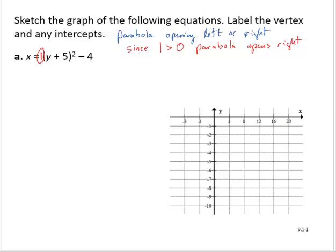Notice that this looks like a vertex form of the parabola that we learned about way back in chapter 4. But the x and the y are in different places. We can still find the vertex just by looking at the equation. So since we have a y plus 5 here, that means that the y coordinate of the vertex is negative 5. And since we have a minus 4 here, that means that the x coordinate of the vertex is negative 4. And we still write the vertex as an ordered pair with x comma y. So then the vertex is negative 4, negative 5.